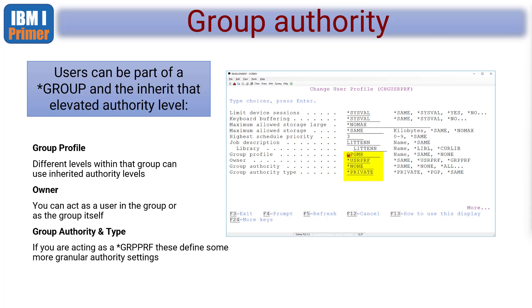Users can be within groups and inherit the rights of that group. This principle is the same on other platforms like Windows. Groups can be within further groups and inherit the rights of those groups. Within group profiles, you can set whether the owner is a user profile or a group profile, meaning that when you're running a process and reading data, you're reading it either as yourself or as that group. Group authorities let us act as groups or act with more granular authority settings.